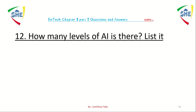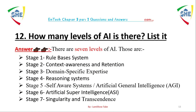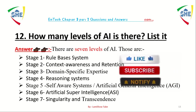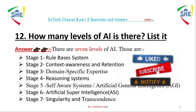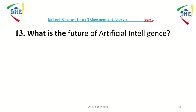Question number 12: how many levels of artificial intelligence are there? There are seven levels of artificial intelligence: the first is a rule-based system, the second is context awareness and retention, the third is domain-specific expertise, the fourth is reasoning system, the fifth is self-aware system or artificial general intelligence, the sixth is artificial super intelligence, and the seventh is singularity and transcendence.